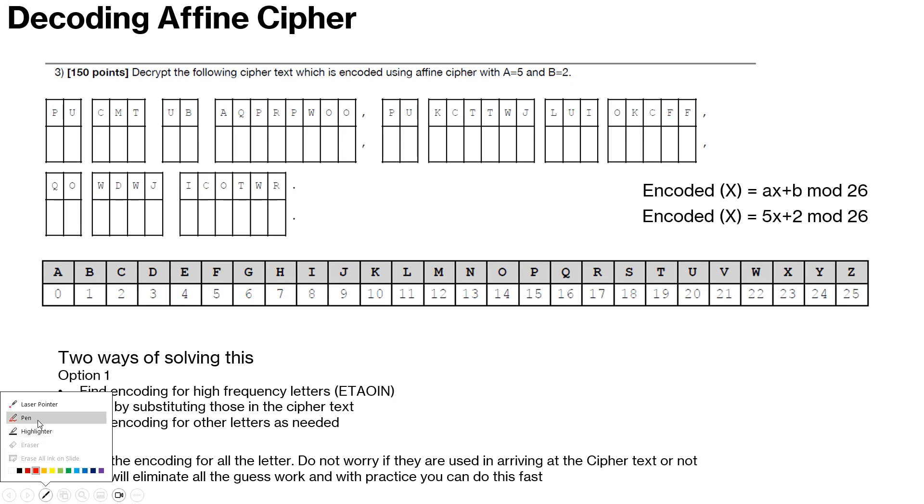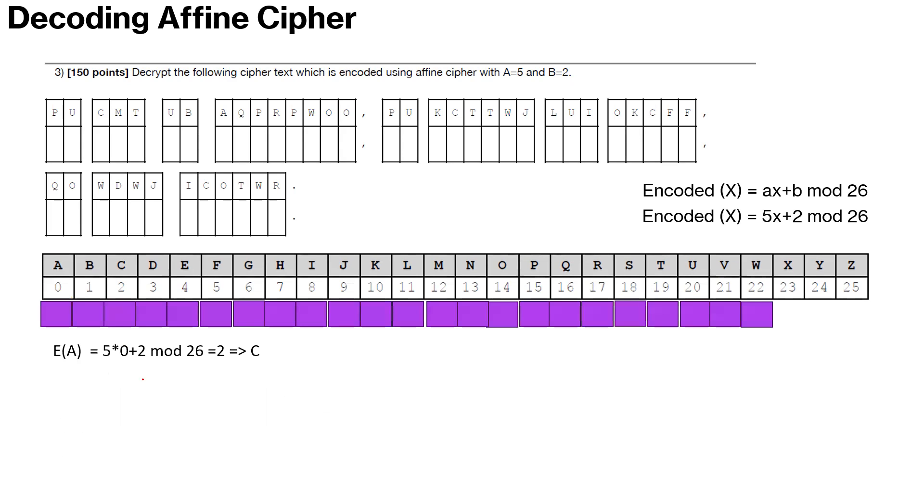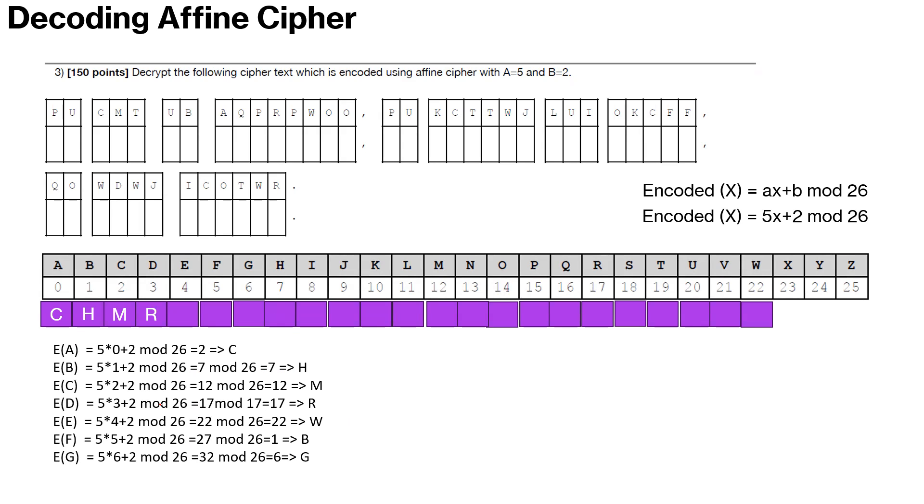5 times 0 is 0 plus 2, so encoding for A will be C. So let's start there. You see A becomes C out here. Now for B it will be 5 times 1 plus 2 mod 26 which is 7, and 7 is H. So we will go ahead and start finding the ciphers or finding the encoded value for each of those alphabets.